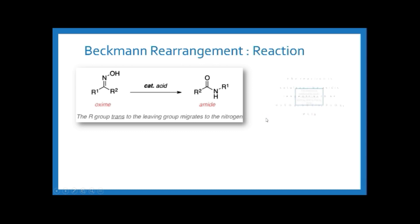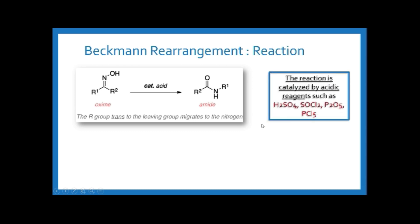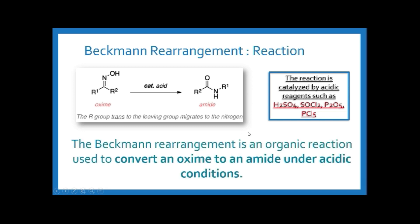The reagents used in Beckmann rearrangement include various acidic reagents such as sulfuric acid, thionyl chloride, phosphorus pentoxide, and phosphorus pentachloride. In summary, Beckmann rearrangement is an organic reaction used to convert an oxime to an amide under acidic conditions.